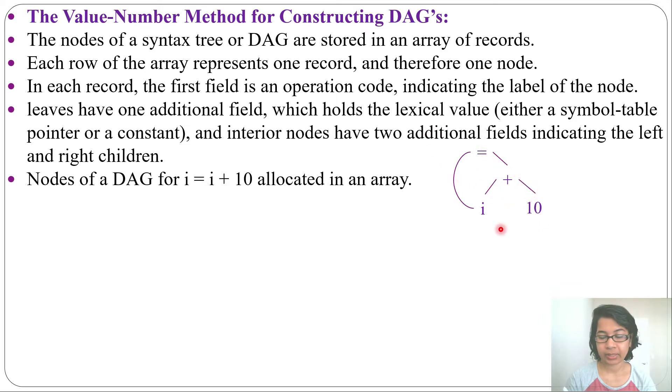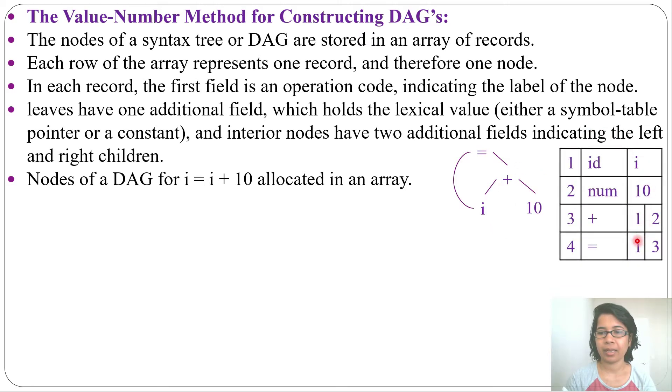Now let me store this DAG information in an array. This array stores the node information of this DAG. First row is for leaf i, here id for identifier and its lexical value is i. Next row num and its lexical value is 10. Leaves have one additional field, just the lexical value or symbol table entry. So here these are the lexical values for these two leaves.